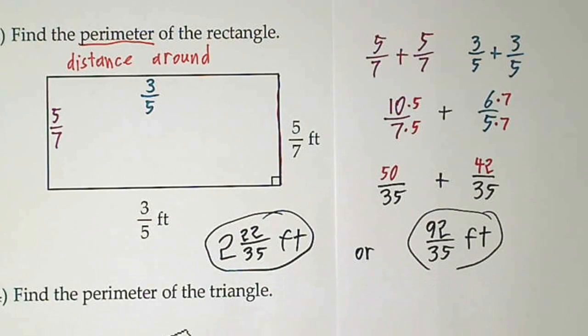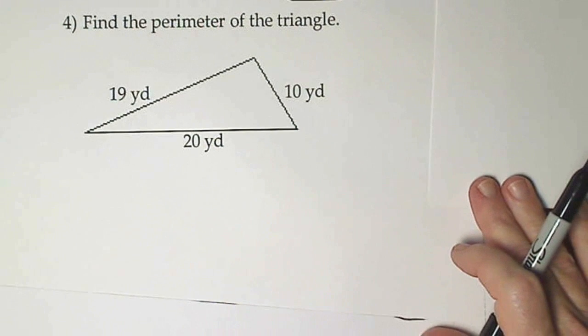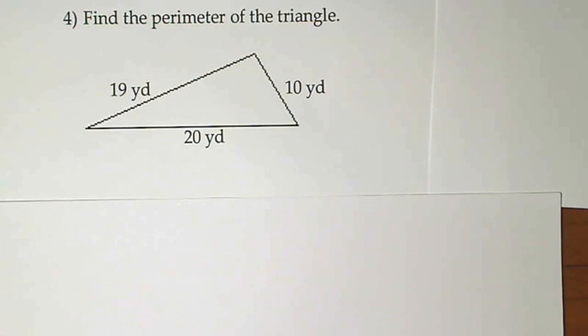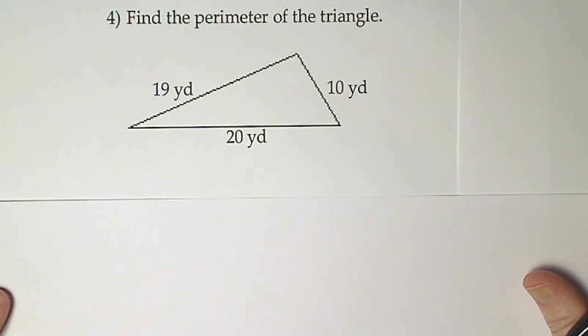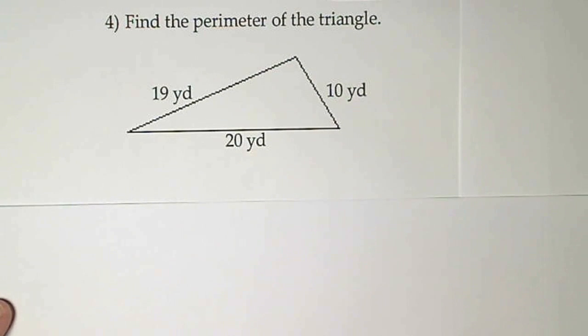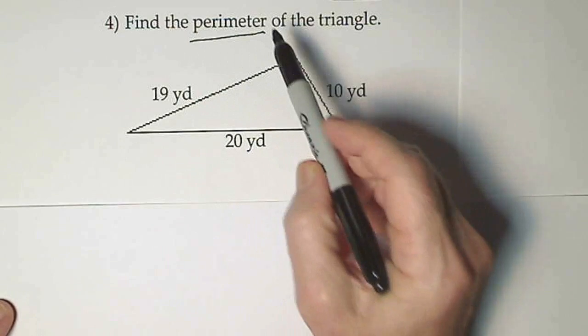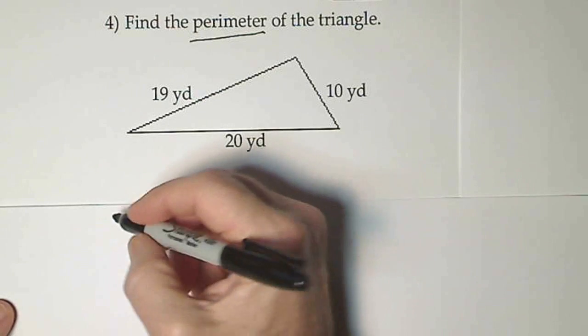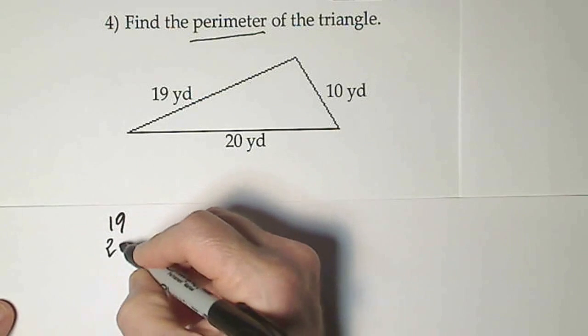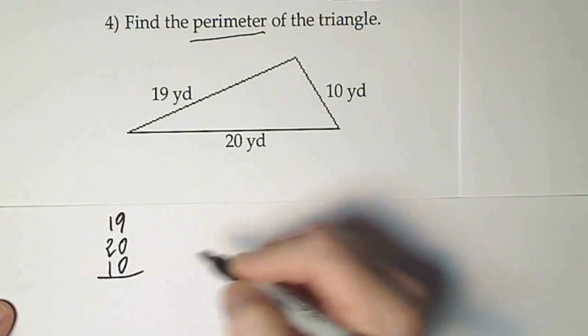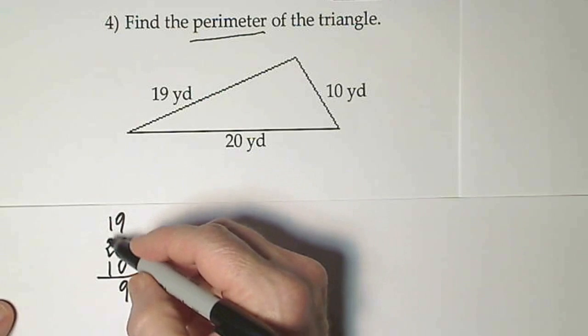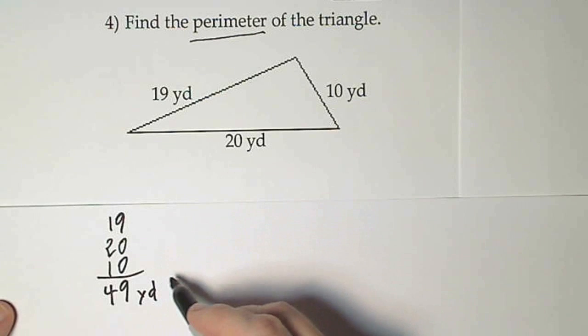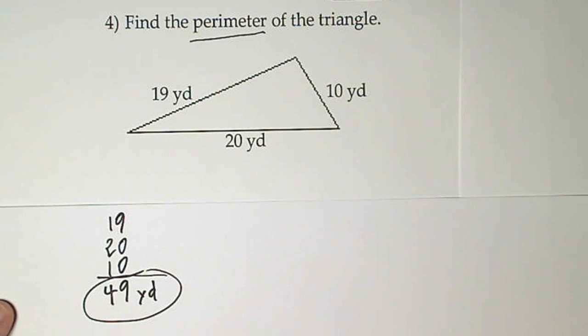The next one we'll look at is perimeter of a triangle. On this, they've given us all three sides. So we simply have to add them up. Anytime they ask for a perimeter, they're just saying, what's the distance all the way around? So all we have to do is add 19, 20, and 10. So we get 49 yards. That's the distance around the triangle.